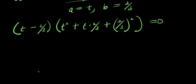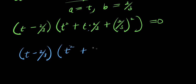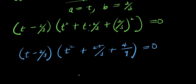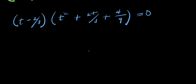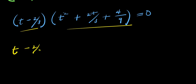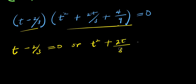So from here, I'm going to have t minus 2 over 3, times t squared plus 2t over 3, plus — raising each to the power of 2: 2 squared is 4, divided by 3 squared is 9 — and this equals 0. So from here, I'm going to equate each factor to 0. I have the first one: t minus 2 over 3 equals 0, or I have t squared plus 2t divided by 3 plus 4 divided by 9 equals 0.